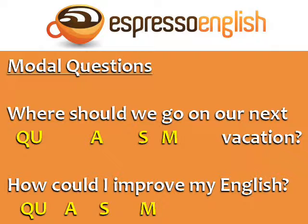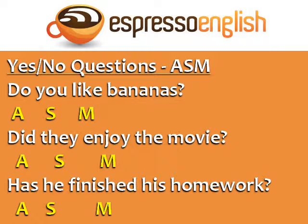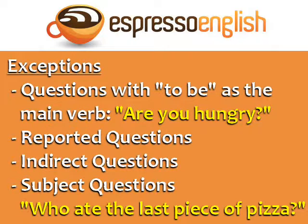Modal verbs also follow the same formula: 'Where should we go on our next vacation?' and 'How could I improve my English?' For yes/no questions, there is no question word, but they still follow the formula of auxiliary verb, subject, main verb — for example: 'Do you like bananas?' 'Did they enjoy the movie?' 'Has he finished his homework?'